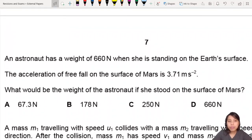Now we are on the kinematic section of the whole paper. An astronaut has weight 660 Newton when she's standing on the Earth's surface. But then you go to Mars. Wait a second, why are we on Mars?